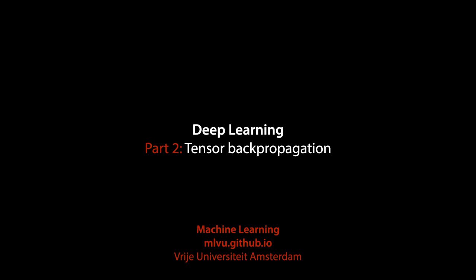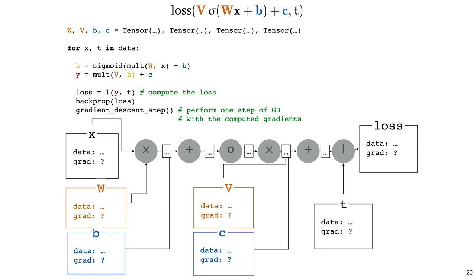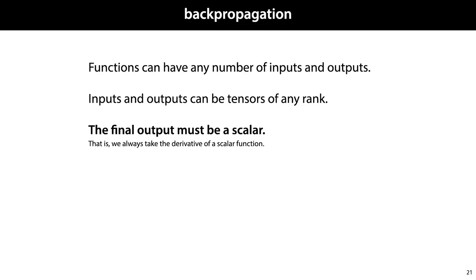In the previous video, we talked about how deep learning systems like PyTorch and TensorFlow allow us to build up a computation graph in code. Once we have this computation graph, we can then use it to implement backpropagation. To do this efficiently on computation graphs that contain tensors, we will assume these three basic rules.